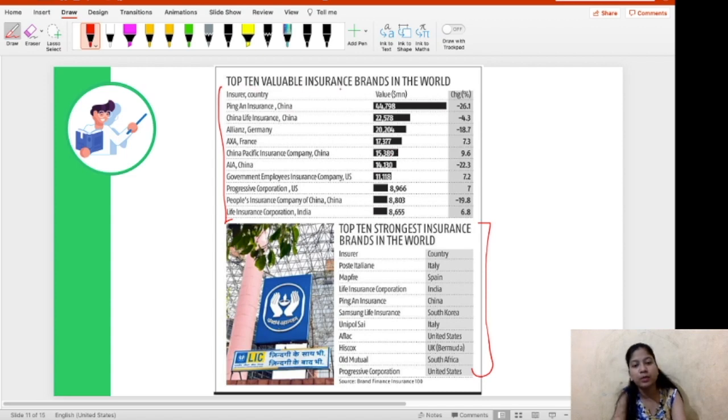And the second ranking is about the top 10 strongest insurance brand in the world. So, let us see where does our LIC stands in both these lists. So, in the first list, that is the top 10 valuable insurance brands in the world list, LIC stands at the 10th position with the value of $8,655 million. And in terms of strength ranking, that is the strongest insurance brand in the world, LIC stands at the third rank. So, this is again amazing for LIC. This is a very good ranking that it has managed to achieve and which company or which brand is at the first ranking in both of these rankings. In the first ranking, it is a China-based firm and in the strongest brand ranking, it is Post-Italian, which is an Italy-based firm.